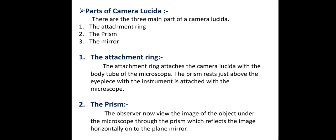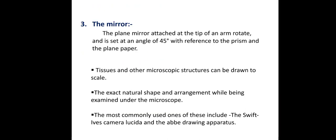There are mainly three parts of Camera Lucida: the attachment ring, the prism, and the mirror. The attachment ring attaches the Camera Lucida to the body tube of the microscope. The prism rests just above the eyepiece when the instrument is attached. The observer views the image of the object through the prism, which reflects the image horizontally onto the plane mirror. The plane mirror is attached at the tip of an arm, rotates, and is set at an angle of 45 degrees with reference to the prism and the plane paper. Through this arrangement, structures can be drawn to scale, extracting natural shapes while being examined under the microscope.